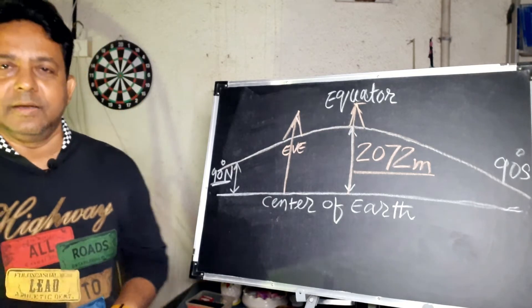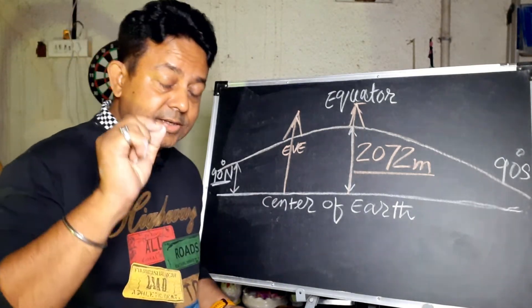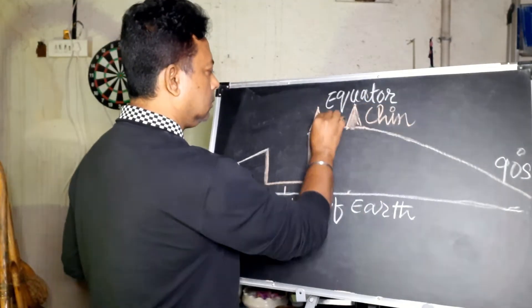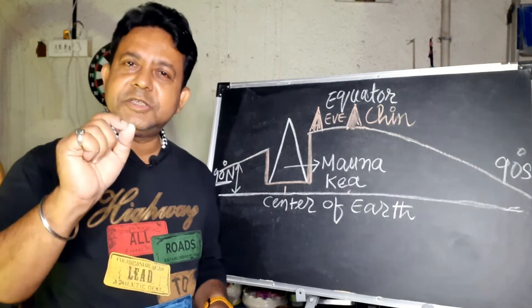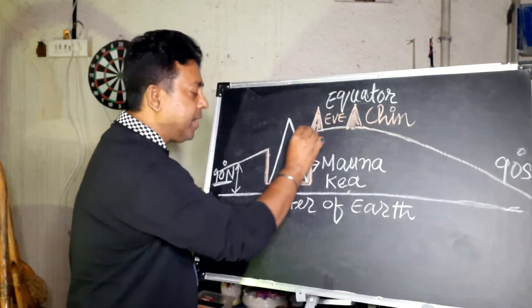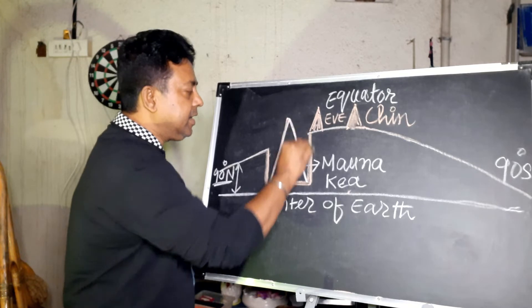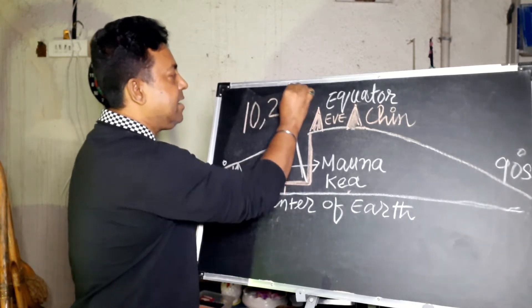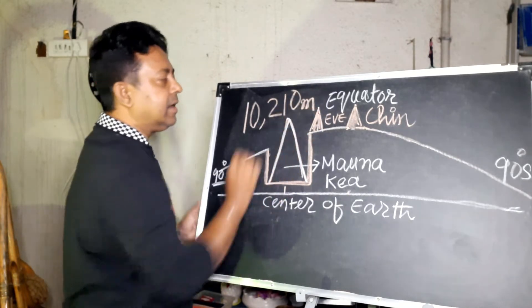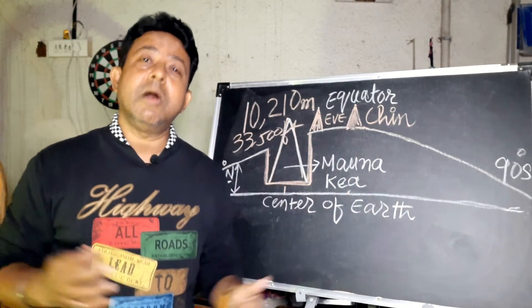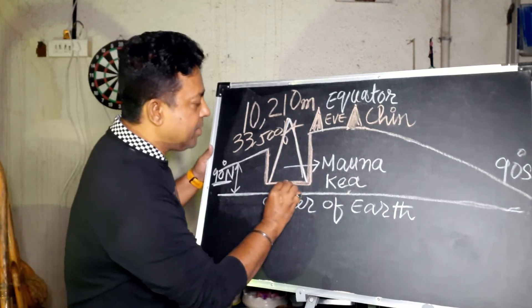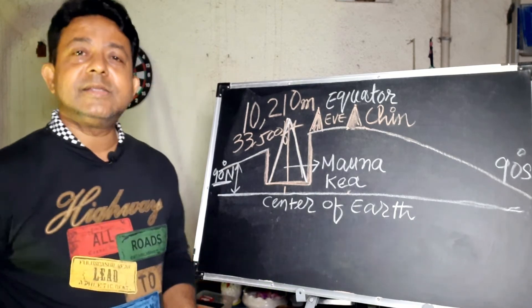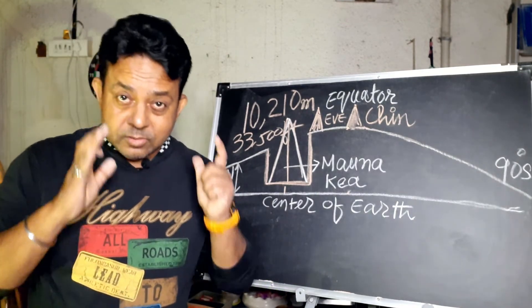Now what about Monarchia? That's a little different thing. Now if you look at Mount Monarchia, which is in Hawaii, from the base of the mountain, the mountain is about 10,210 meters high, it's way beyond Mount Everest. So if you are measuring from the base of the mountain, Mount Monarchia is the tallest mountain on Earth.